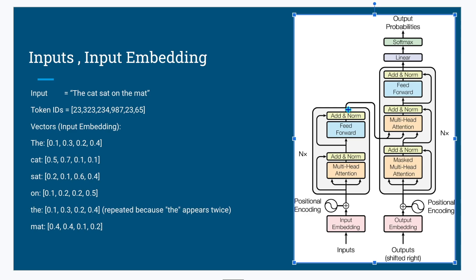After the feed forward network also outputs the same four-dimensional vector, one layer is completed. The changed values go to the second multi-head attention, then second feed forward, then third multi-head attention, third feed forward, and so on. If the value of NX is 10, then it all gets repeated 10 times. In all these 10 iterations, the output is again the same four-dimensional vector for each word, and then the output from the encoder layer gets fed to the decoder layer.